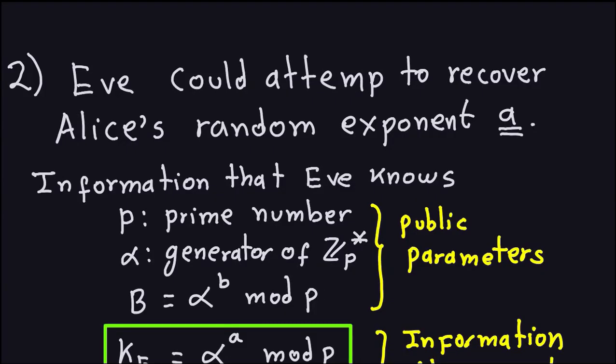Hello and welcome again. We're talking about the passive attacks on the ElGamal scheme. In the last video we talked about one attack that Eve could do — compute the private exponent for Bob. Now this is going to be the second passive attack that Eve can do, and it will also involve computing a discrete logarithm. So the second attack will be that Eve could compute Alice's random exponent A, which is one part of the setup for the ElGamal scheme.